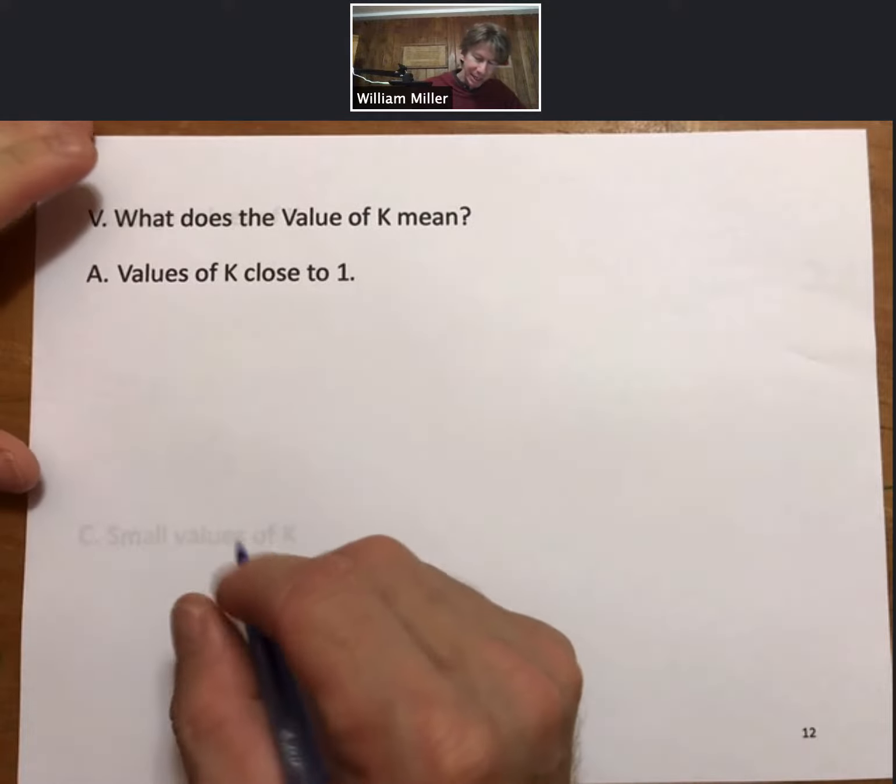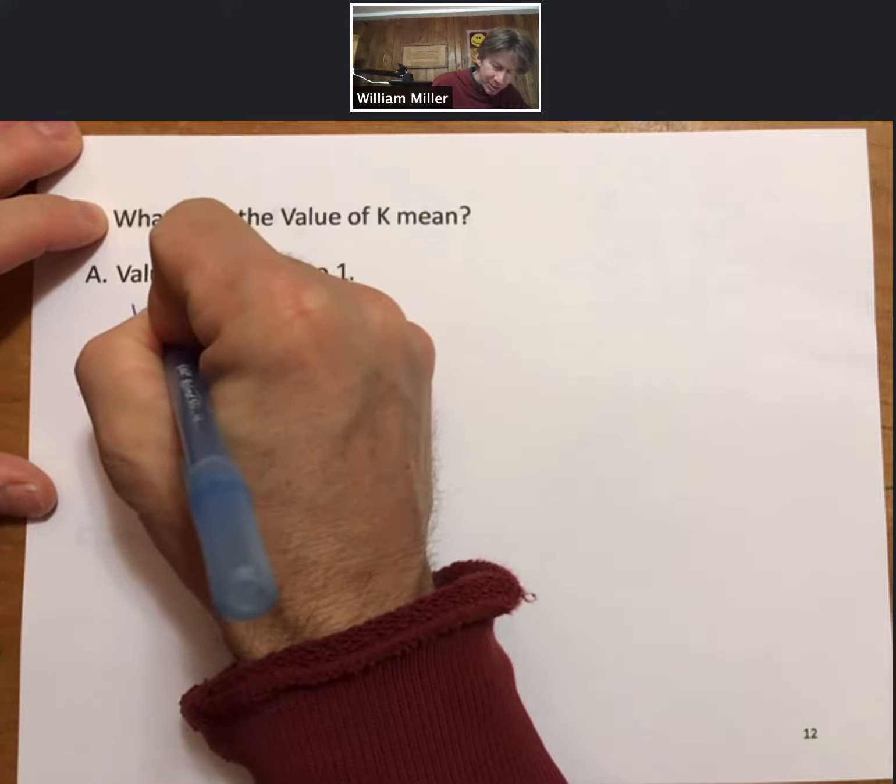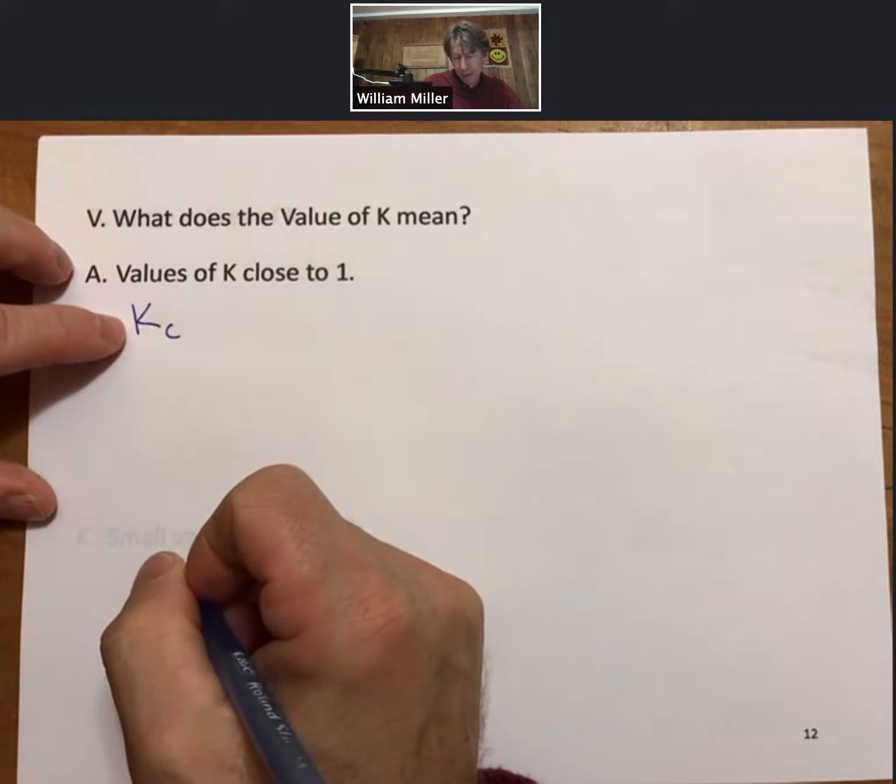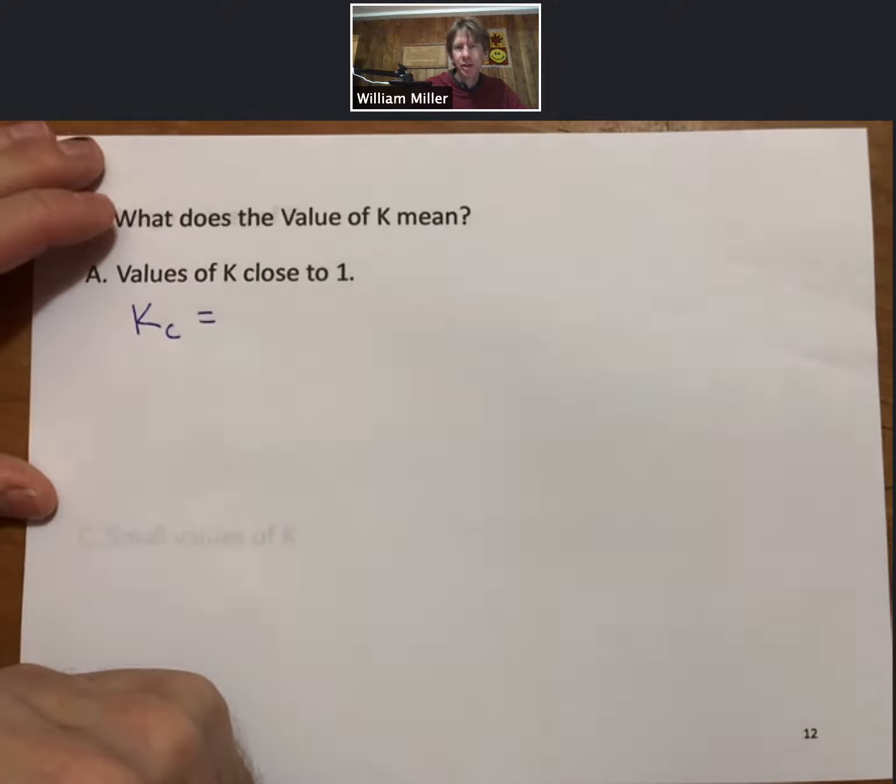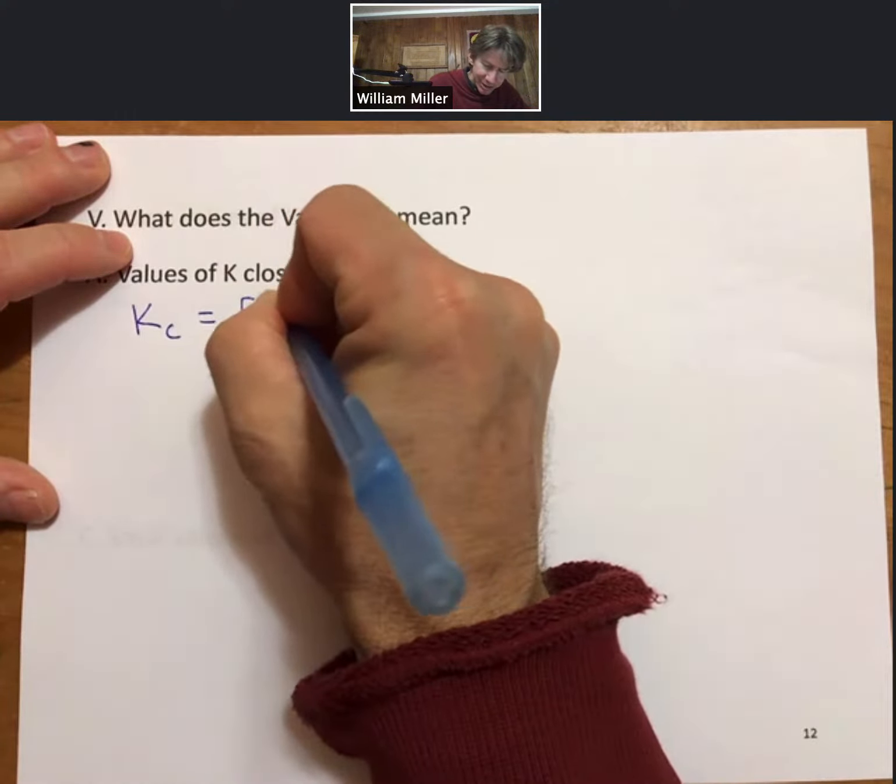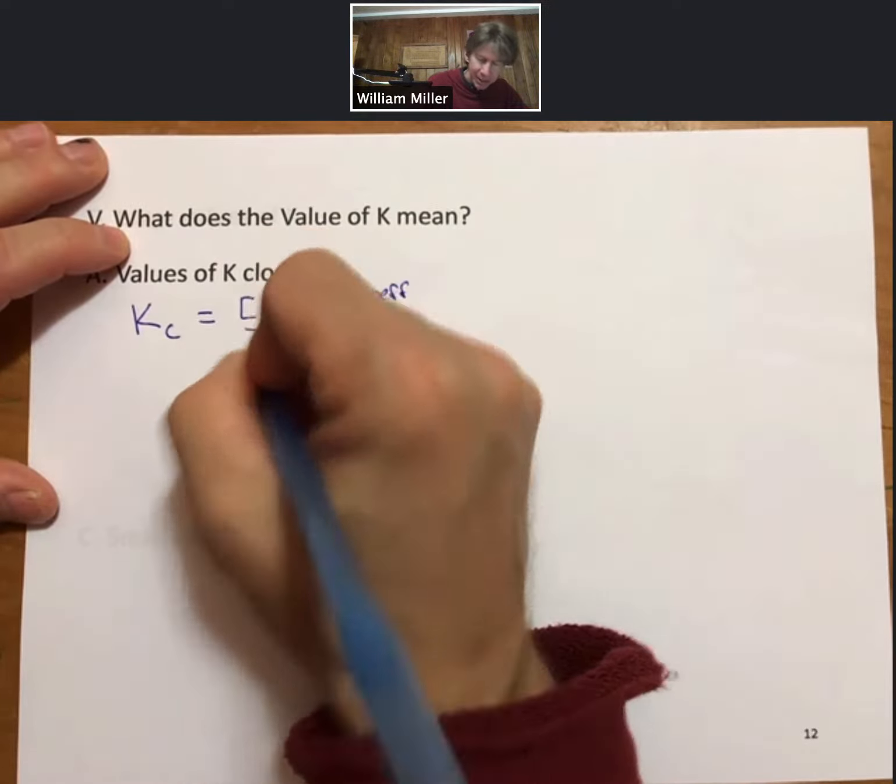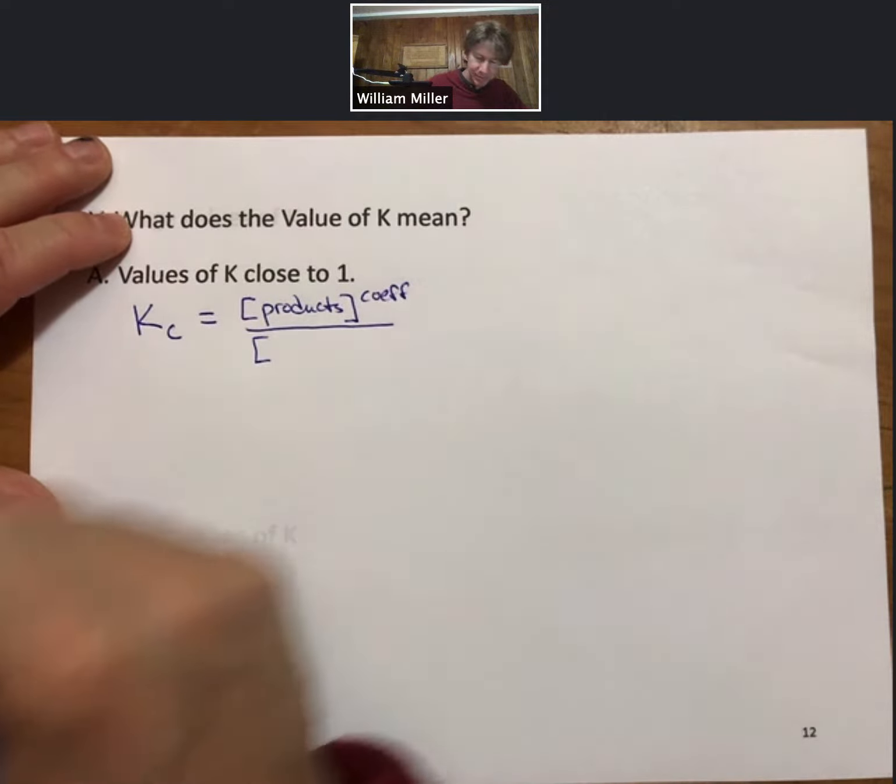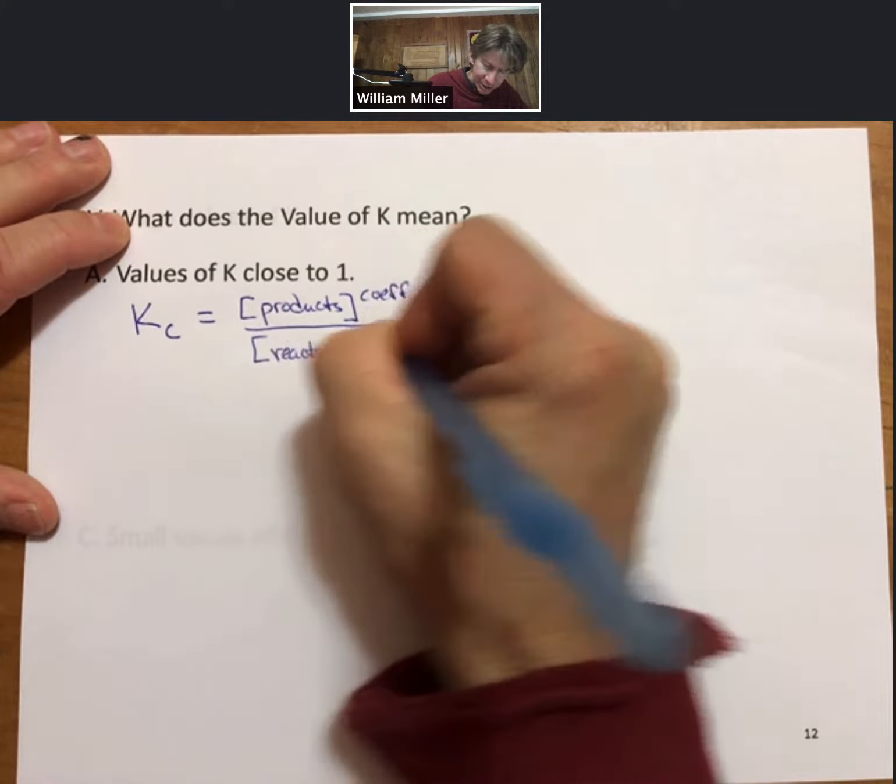As an example, let's start with the general equilibrium constant expression in terms of concentrations. It's the concentration of products raised to coefficients divided by concentration of reactants raised to the power of coefficients.